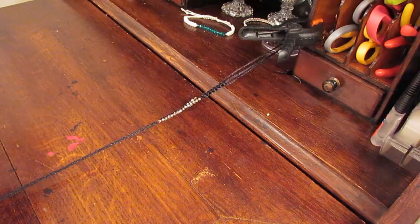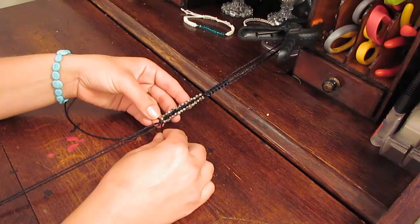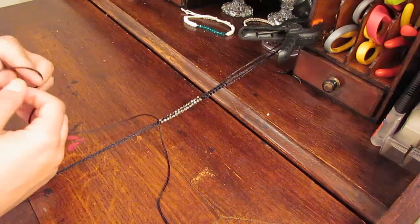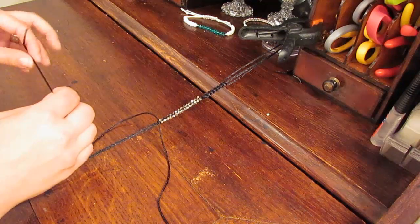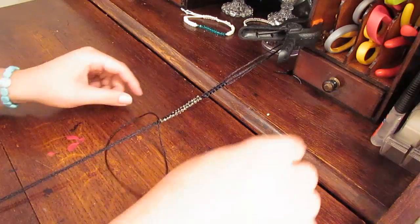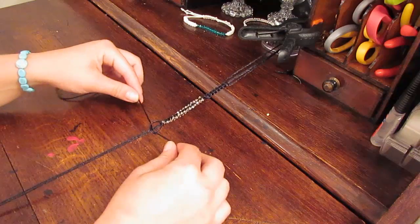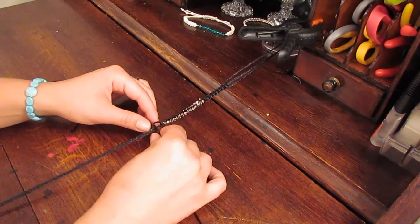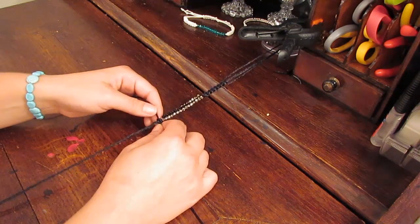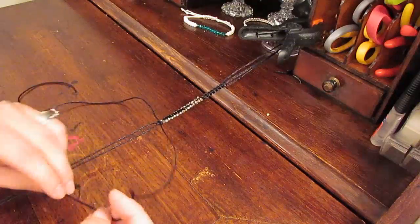Tie my next piece of string on with just a regular knot and then I'm going to begin my square knotting process again. You could even do a friendship bracelet, you could do a cobra stitch, lots of, you know, whatever you like. I like square knotting. I do have a detailed video on square knots if you do need that.